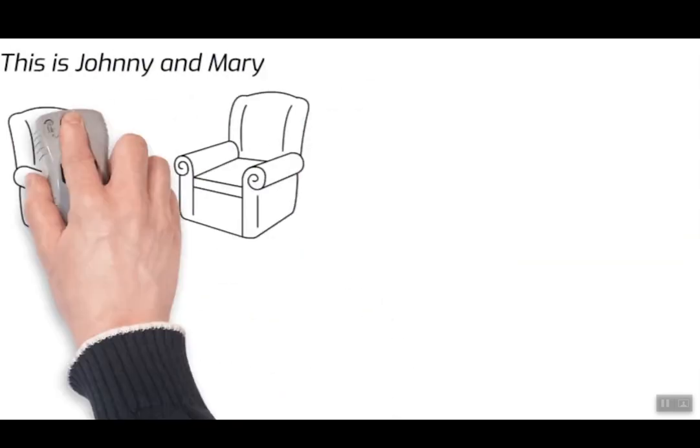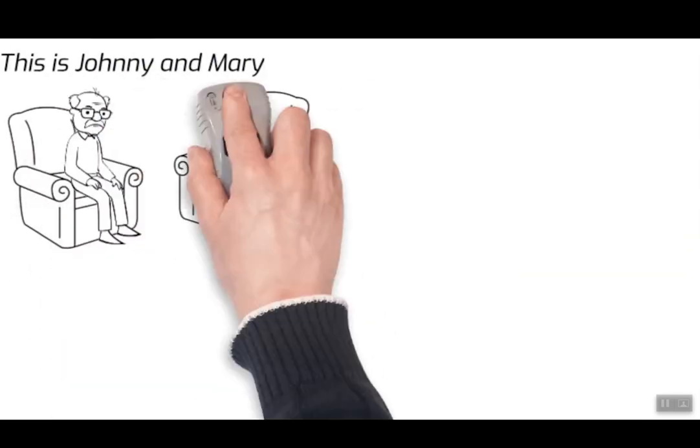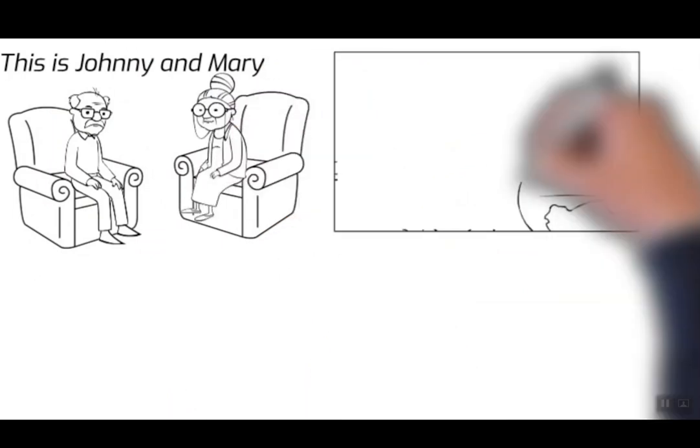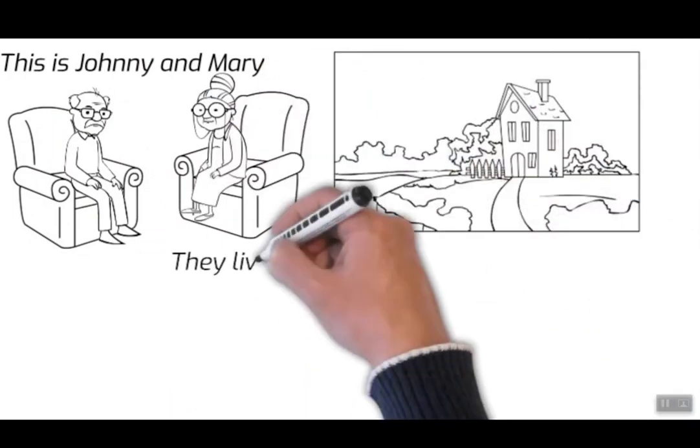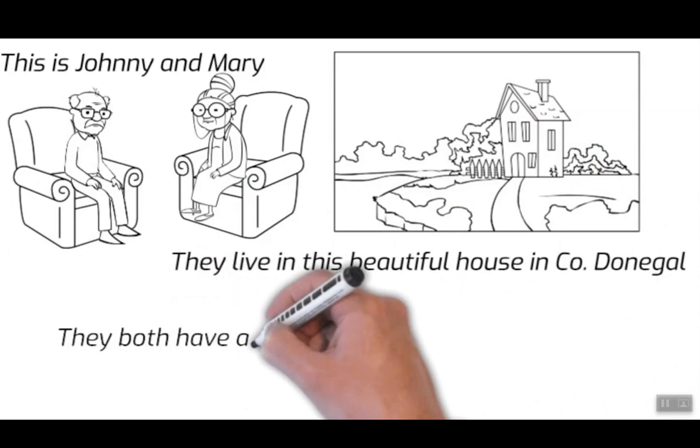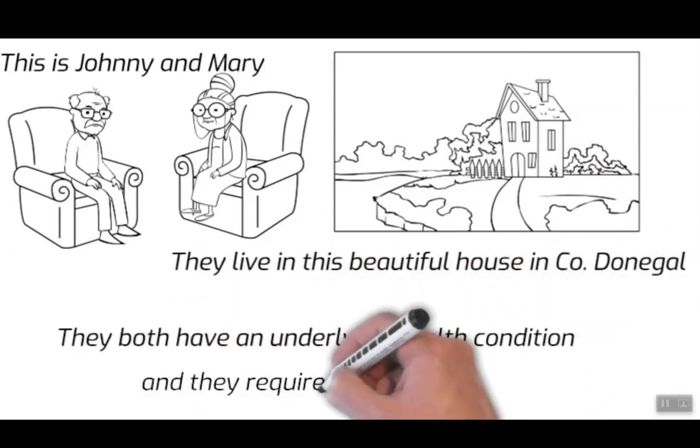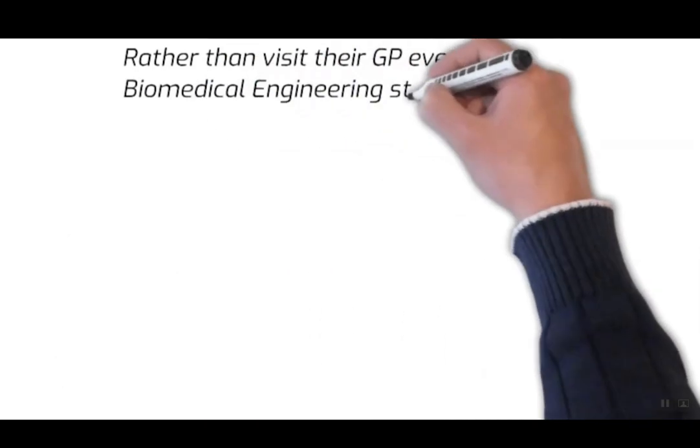This is Johnny and this is Mary and they live in this beautiful house in County Donegal. They both have an underlying health condition that requires daily monitoring.